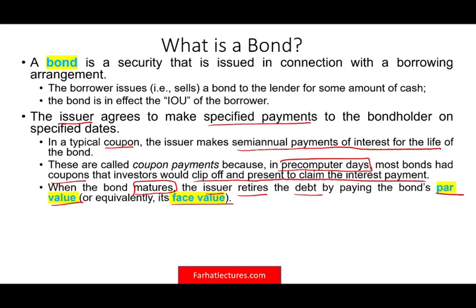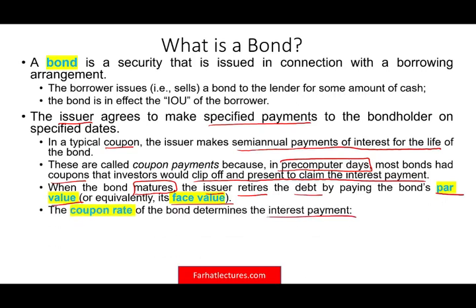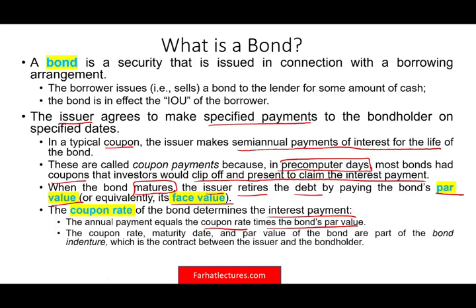What is the face value or par value? It's the number printed on the bond. If you look at a $100 bill, you see written on it 100. If you look at a $20 bill, you see written on it 20 — this is called the face value. Every bond will have a face value. Typically, each bond has a face value of $1,000. The coupon rate determines the interest payment — the annual payment equals the coupon rate times the bond par value.